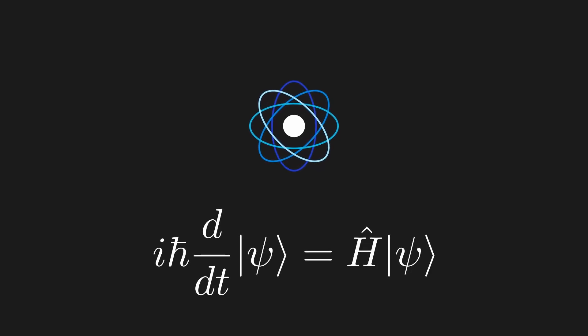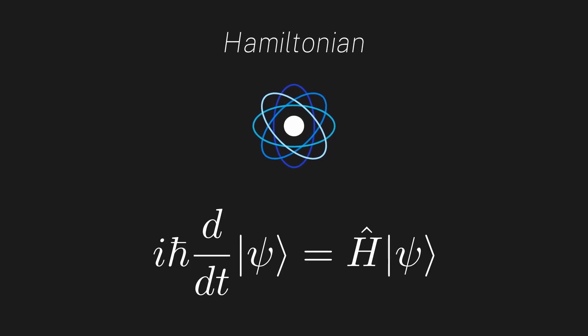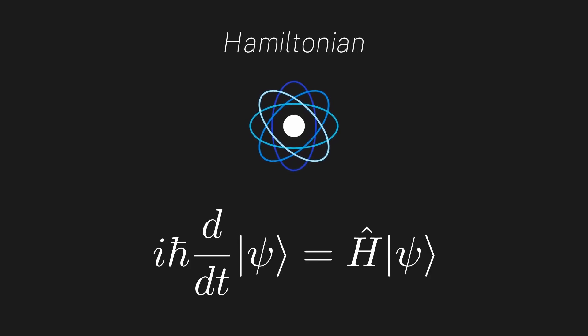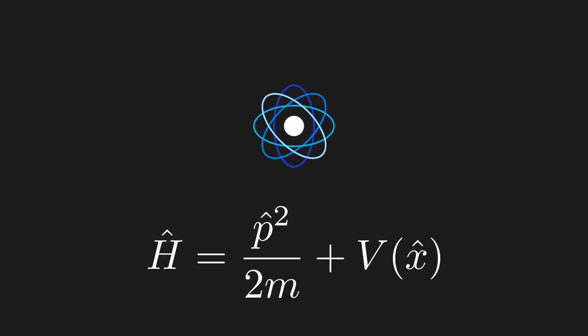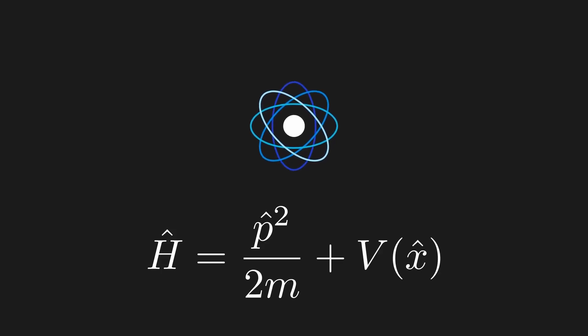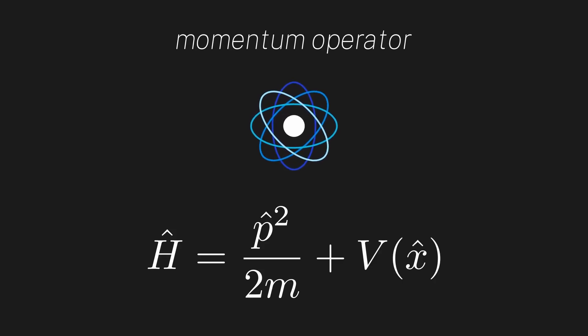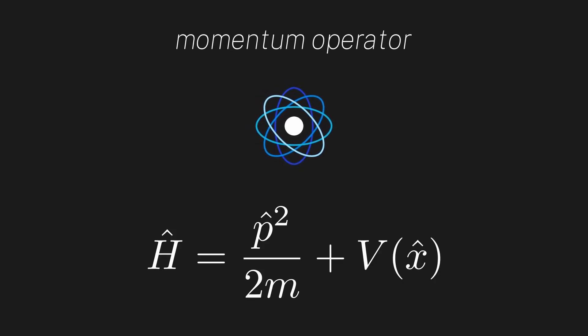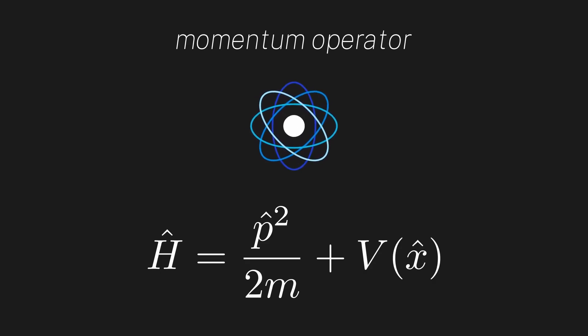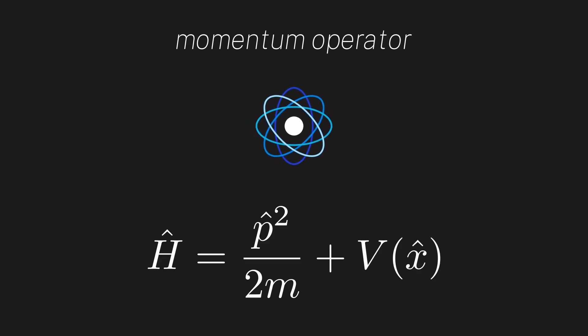Hi everyone. In the last episode we derived the Schrödinger equation and found that it depended on the energy operator, also called the Hamiltonian. To begin working with the Schrödinger equation we need to dig into the details of the energy operator, which can be written as the momentum squared divided by 2m plus the potential energy. Since the momentum operator shows up in the Hamiltonian, I want to spend this episode really digging into how the momentum operator works in quantum mechanics and why it acts as a derivative on our wave function.